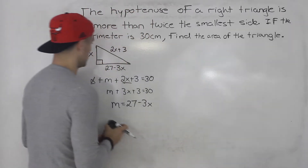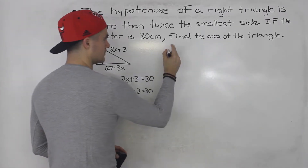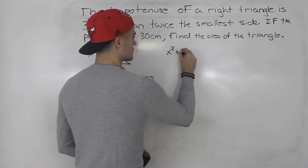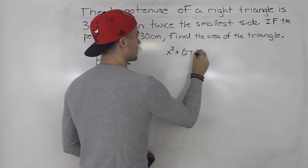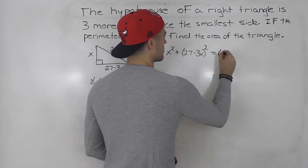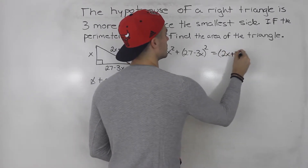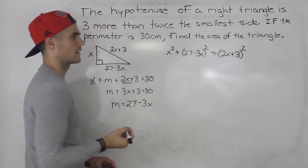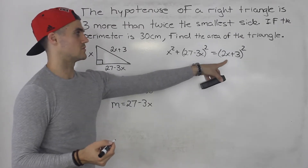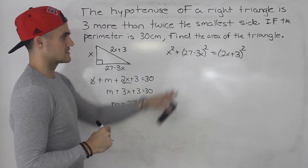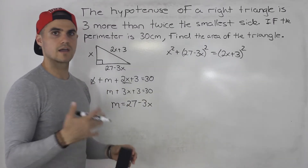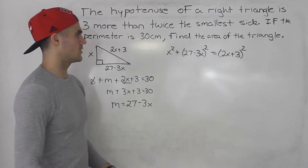So we can take x squared plus the other side squared — so (27 minus 3x) squared — and that has to equal the hypotenuse squared. A squared plus B squared equals C squared. Notice that this is a quadratic equation. We can just expand everything, bring it over to one side, and solve for x.